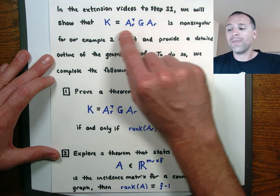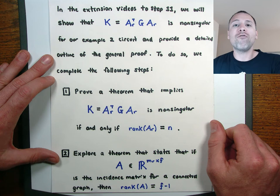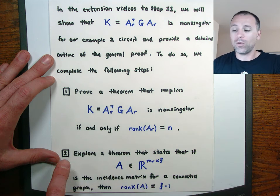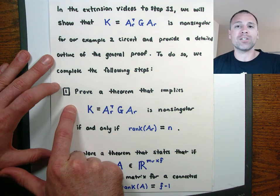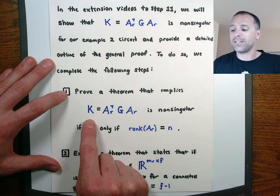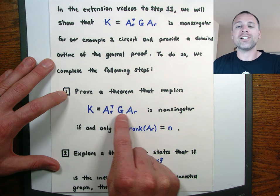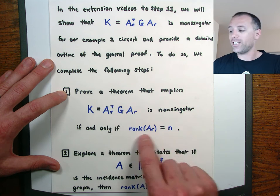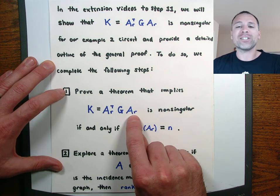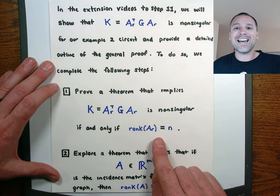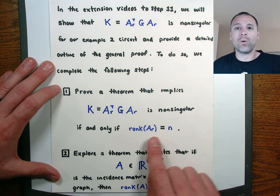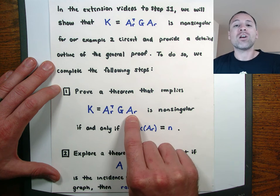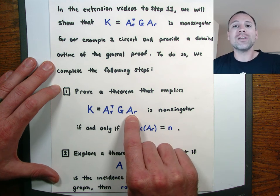To show that this matrix is non-singular, we're going to follow a four-step process and dedicate one video to each step. This video covers the first step: we're going to prove a theorem that says the matrix K, which is AR transpose G times AR, is non-singular if and only if the rank of the matrix AR equals N — or equivalently, the matrix AR has linearly independent columns.